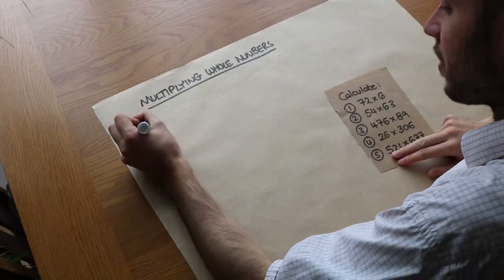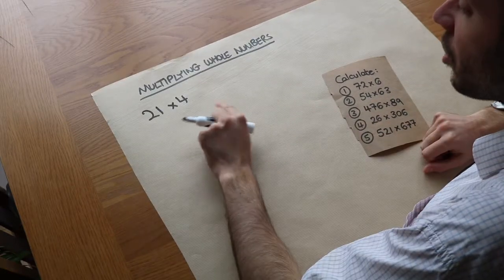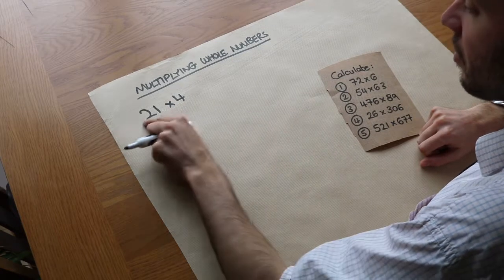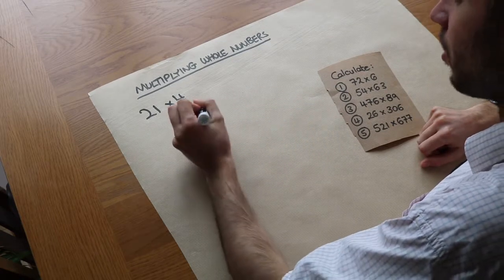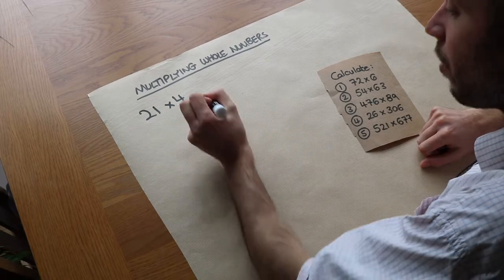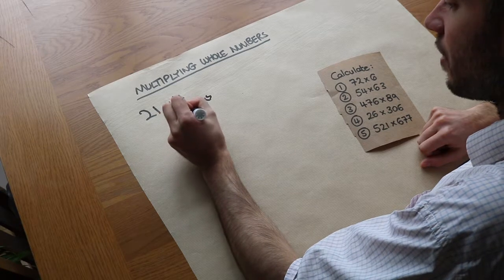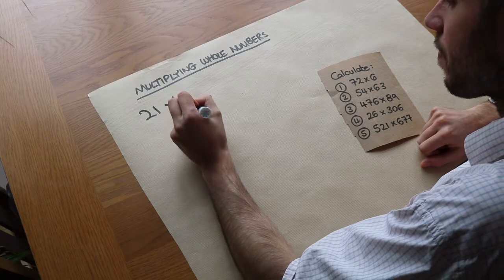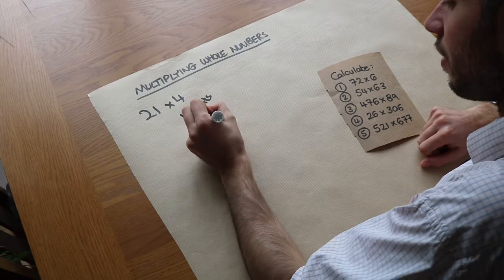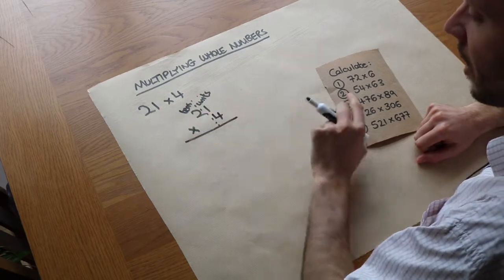Let's take a simple example: 21 times 4. To do this, we arrange the digits into columns based on their place value, just like we did with column addition. The 1 is in the units column and the 2 is in the tens column. Since we're multiplying by 4, that's 4 units, so the 4 goes in the units column. We've got 21 times 4, right-aligning the numbers.